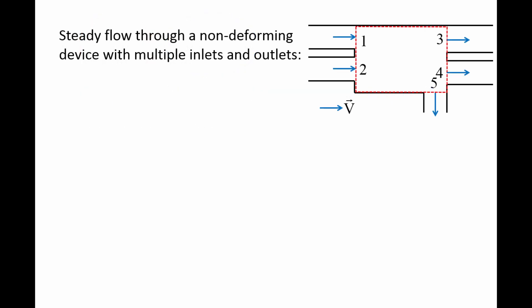Now let us look at a generic device which has multiple inlets and outlets and does not deform. The device is surrounded by a control surface marked by red dashed lines, and the control volume is inside this control surface. The direction of flow is indicated by blue velocity vectors, and the inlets are labeled 1 and 2, while the outlets are labeled 3, 4, and 5. The direction of the normal vectors are shown in orange and point outward from the control surface.